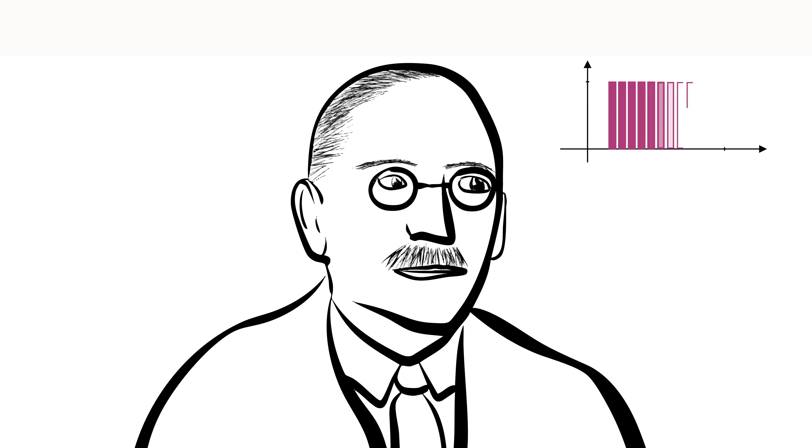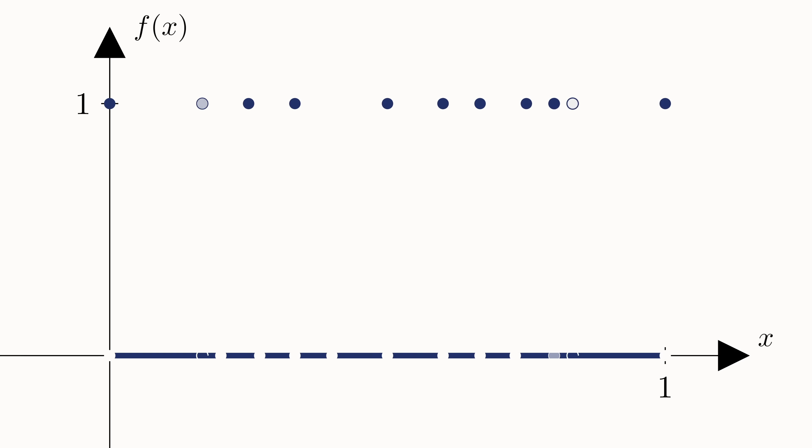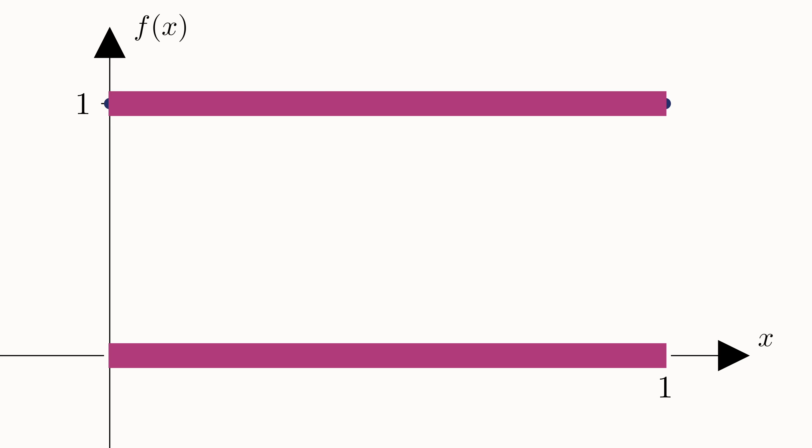Instead of dividing up the x-axis into smaller and smaller intervals, as we do with the Riemann integral, Lebesgue suggested dividing up the range or the vertical axis instead. In this case, there are only two possible values that the Dirichlet function can take: one and zero. For a function that takes on additional values, you would divide it up into more regions. In order to evaluate the Lebesgue integral, all we need to do is to take the value on the y-axis and multiply by the length of the interval that takes on those values.